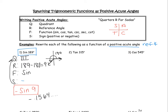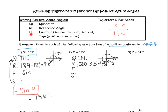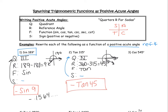Example two: tangent of 315 degrees, rewritten as a function of a positive acute angle. We need Q, R, F, S. 315 is in quadrant four. The reference angle is 360 minus 315, which is 45. The function is tangent. In quadrant four, only cosine is positive, so tangent must be negative. Read from bottom to top: the answer is negative tan of 45. Type both forms into the calculator — you should get approximately negative 1 both times.